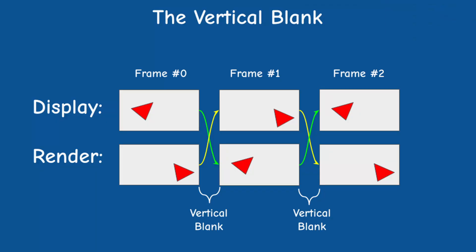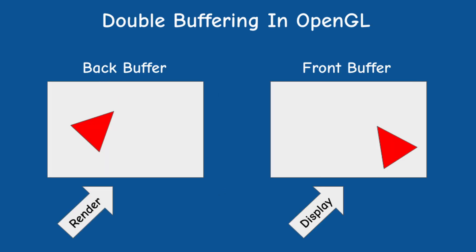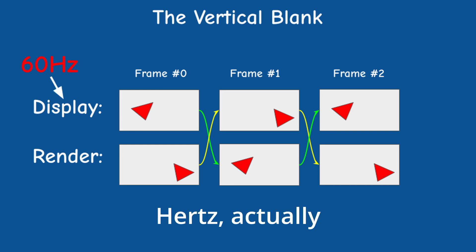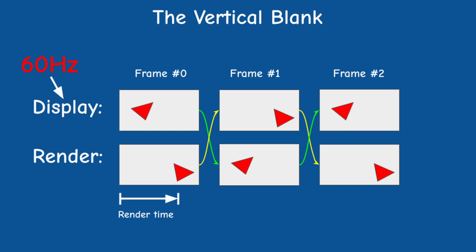From the programmer's point of view, the vertical blank is still a good opportunity to switch frames. In GLFW and OpenGL we use the function glfw_swap_buffers to switch between the front and back buffers, and this function will by default wait for the next vertical blank or vsync. So if the display is set to 60 frames per second and our application completes rendering the frame in less than 1/60th of a second, which is about 16 milliseconds, we will achieve a steady state of 60 fps.